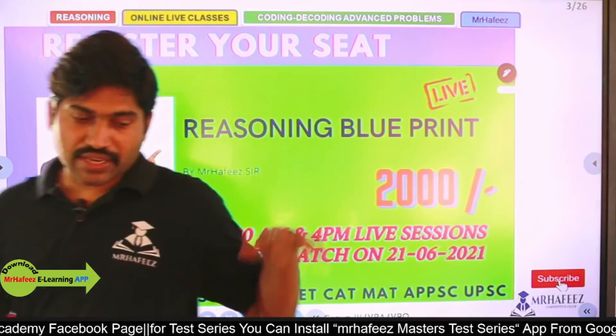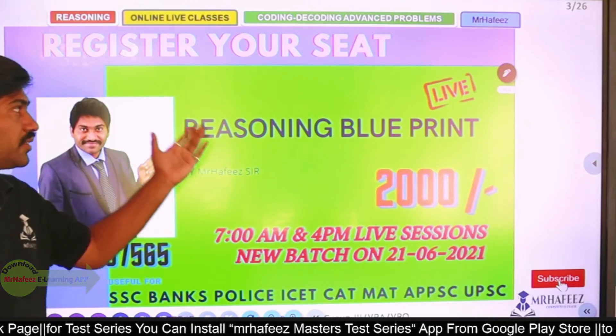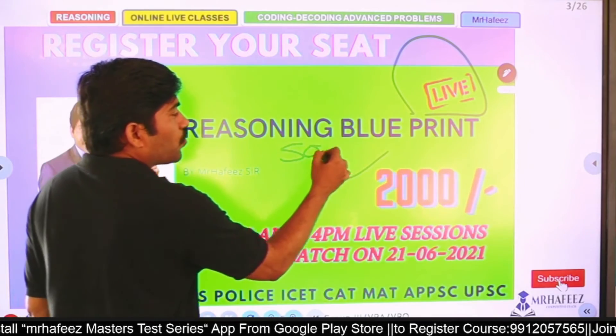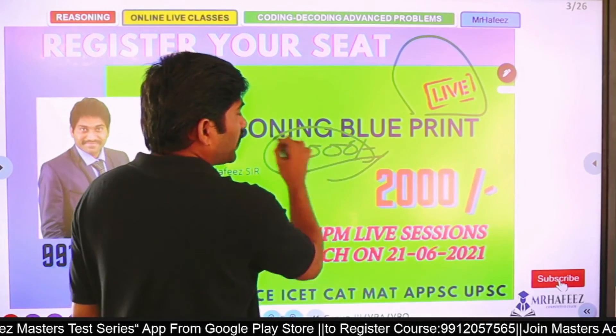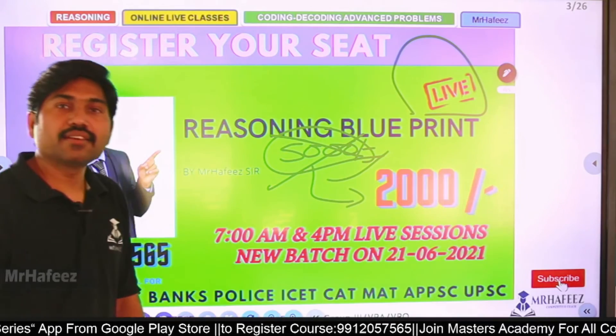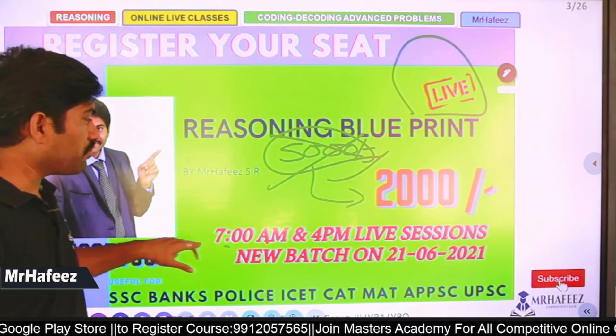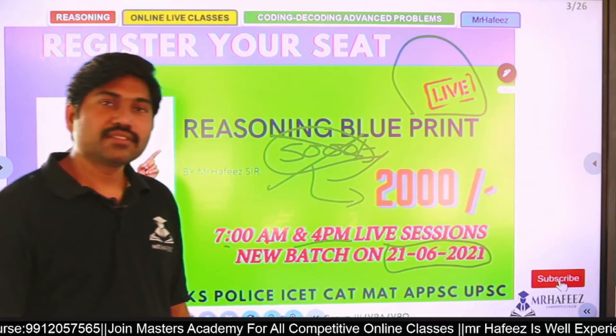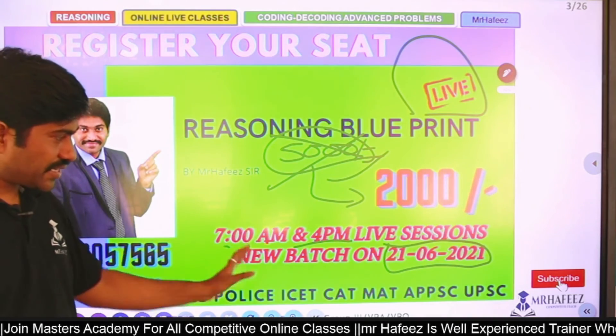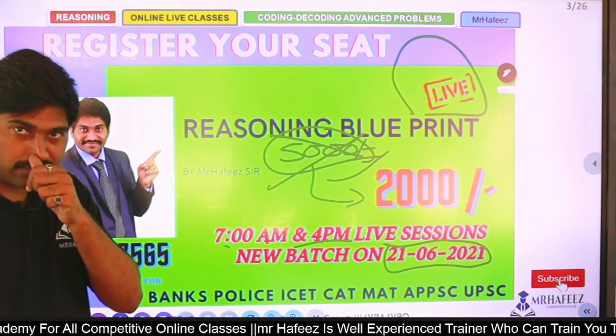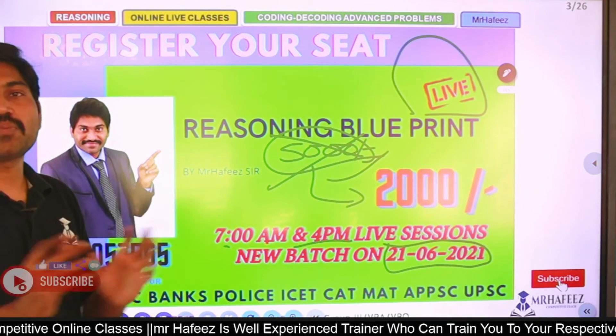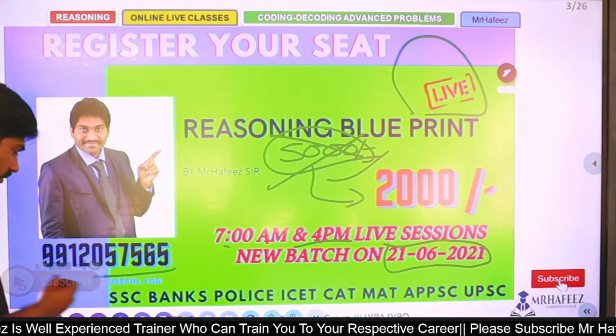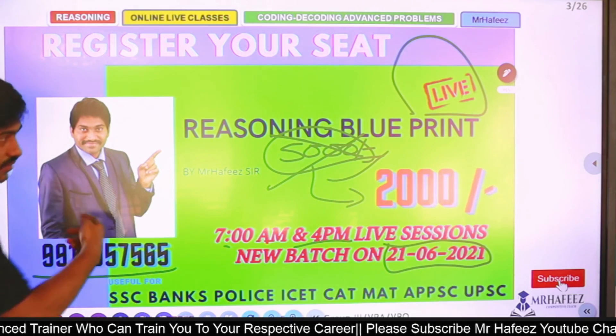So here is a course what we are doing already - Reasoning Blueprint Course. This is live and it costs only 2000 rupees. Generally its cost is around 5000 rupees, but at present we are giving it for 2000 rupees only. 7 a.m. and 4 p.m. live classes. It started today, 21-06-2021. So don't wait, just join and explore the things through Mr. Hafeez e-learning app. For registrations you can contact 99120-57565. Moving to the next question.